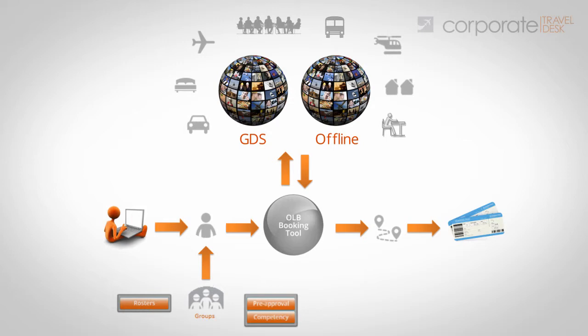The travel desk also has great productivity tools, including an end-user booking request mode where each traveler can use the travel desk application to build their preferred itinerary using full or restricted access to content, with or without pricing. The booking request is then submitted for amendment, approval, and finalization. SMS or email alerts let users know when something has or has not happened.